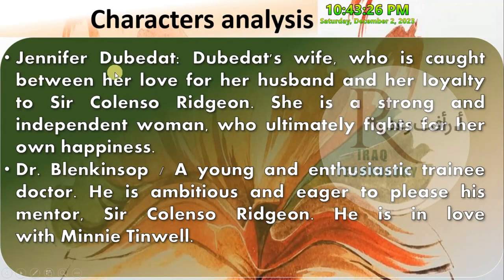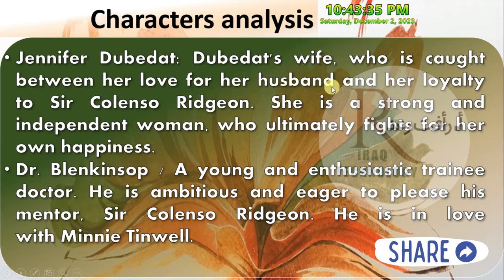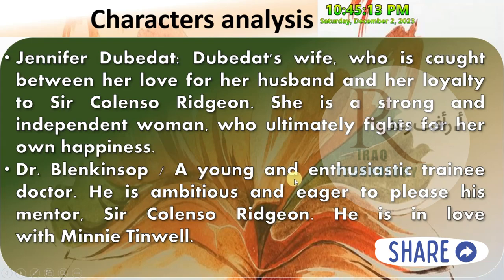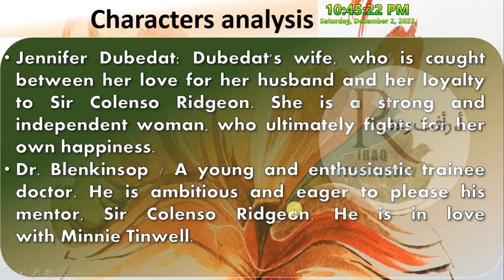Jennifer Dubedat is Dubedat's wife, who is caught between her love for her husband and her loyalty to Sir Colenso Ridgeon. She is a strong and independent woman who ultimately fights for her own happiness. Dr. Blenkinsop is a young and enthusiastic trainee doctor. He is ambitious and eager to please his mentor Sir Colenso Ridgeon.